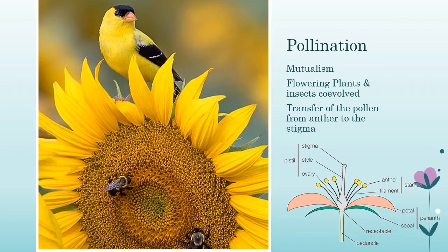The female part of the plant has the egg down in the bottom, and the male part of the plant is a stamen. The top part of that is the anther, and that produces the pollen which has sperm in it. The whole point is to try to get this pollen grain from the anther of one plant to the stigma of another plant.